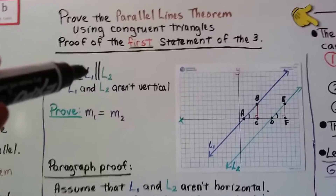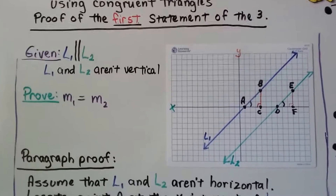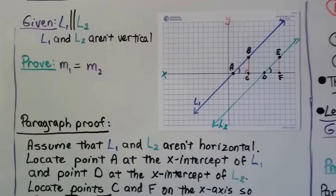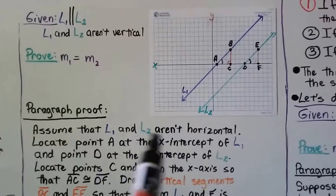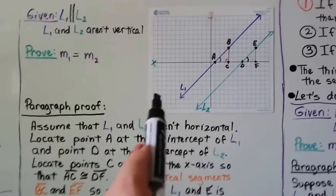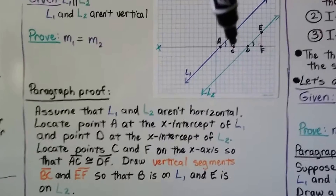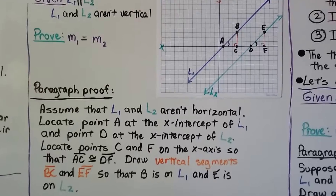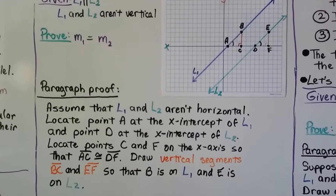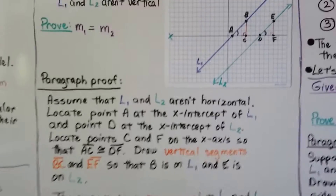It's given that l sub 1 (the blue line) is parallel to l sub 2 (the green line), and that l sub 1 and l sub 2 aren't vertical. We need to prove that m sub 1 equals m sub 2. We assume the lines aren't horizontal. We locate point A at the x-intercept of l sub 1 and point D at the x-intercept of l sub 2. We locate points C and F on the x-axis so that segment AC is congruent to segment DF. We then draw vertical segments BC and EF so that B is on l sub 1 and E is on l sub 2.